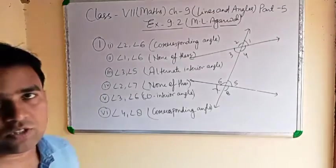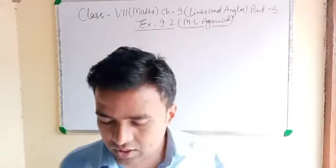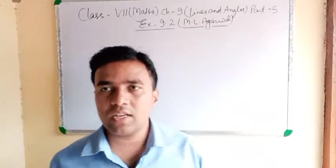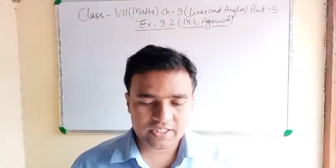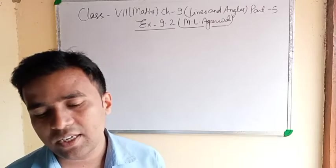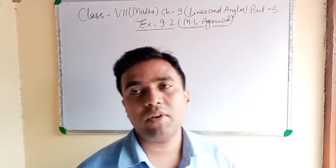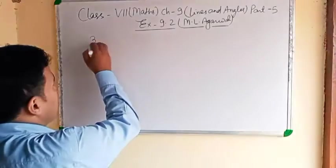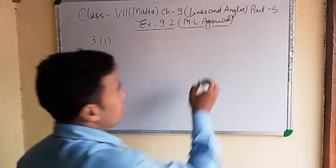Note this down. Question number 2 you can do like question number 1. Question number 3: in each of the following figures, a pair of parallel lines is cut by a transversal. Find the value of the unknown angle.